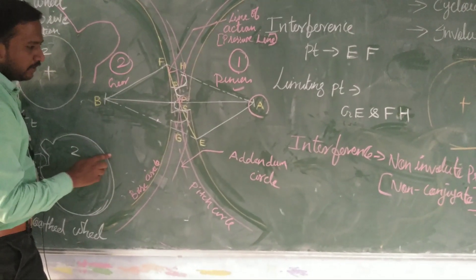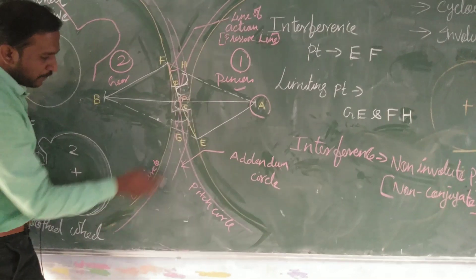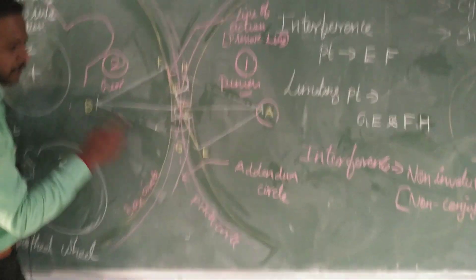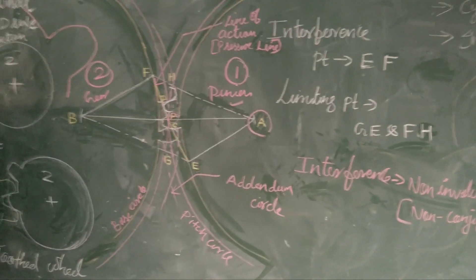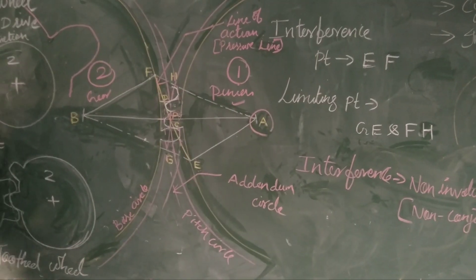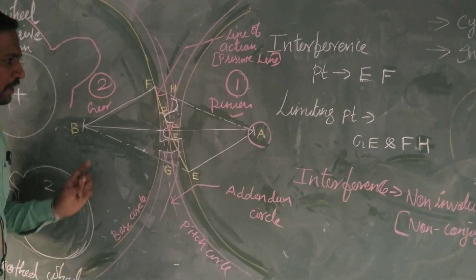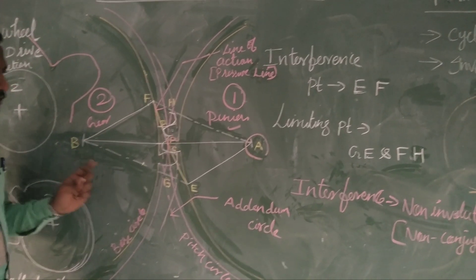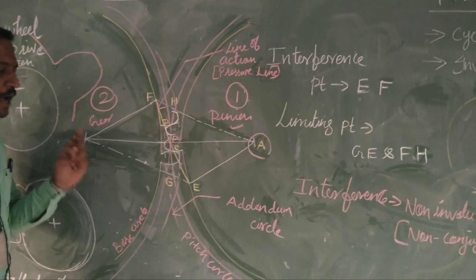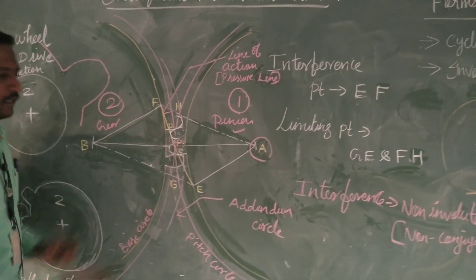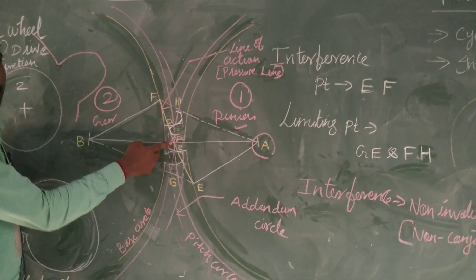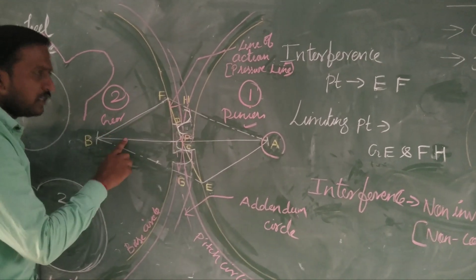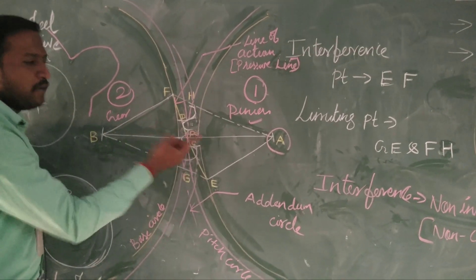Similarly, here also I have drawn a pink color circle with respect to the gear, it is also called the pitch circle of the gear. Where the pinion pitch circle and gear pitch circle have a junction at one point, that point is called the pitch point. This is a common point for both gear and pinion.